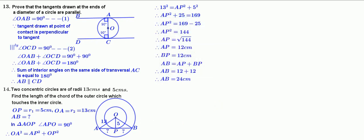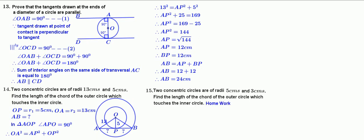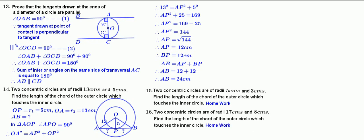Next, problem 15. Two concentric circles are of radii 5 cm and 3 cm. Find the length of the outer circle which touches the inner circle. Take it as homework. Next, problem 16. Two concentric circles are of radii 7 cm and 5 cm. Find the length of the chord of the outer circle which touches the inner circle. This is also for homework.